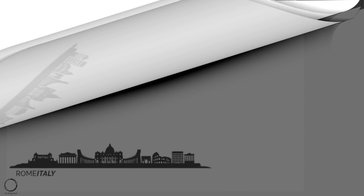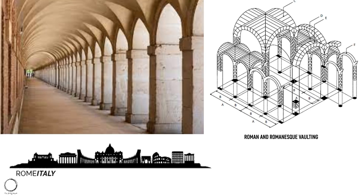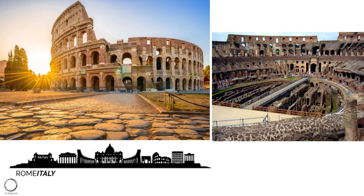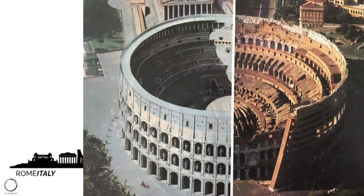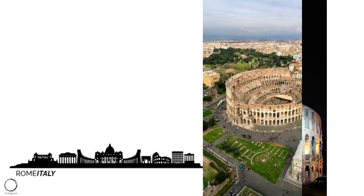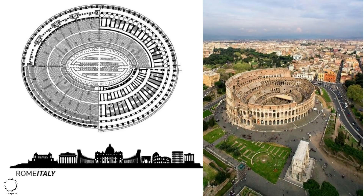Moving on, Rome is the world's main epicentre of classical architecture with arches, domes, and walls as dominant features in the skyline. One of the most prominent structures is the Colosseum, an oval amphitheater in the centre of Rome and the largest amphitheater ever built. Although substantially ruined due to earthquakes and stone robbers, it is still an iconic symbol of imperial Rome and was listed as one of the seven wonders of the world.